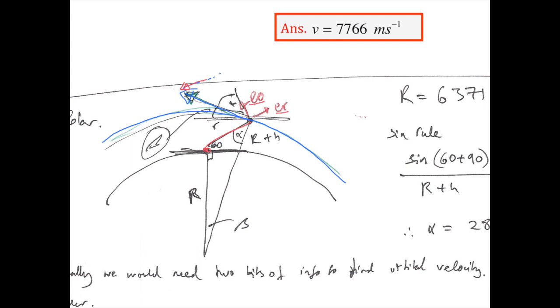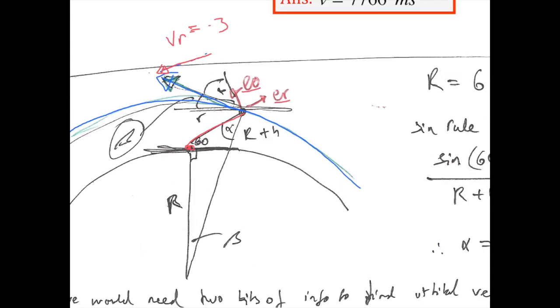Now, we already know R dot. This is VR equal to minus 3,742.